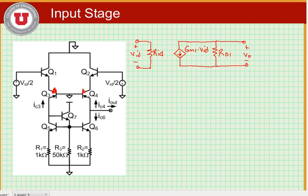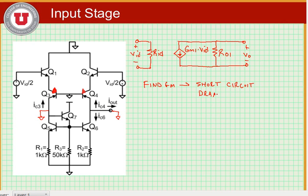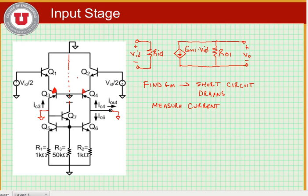To measure GM, what we're going to do is short circuit the drains of these transistors and measure the current that flows into the short circuit due to a voltage at the input. Looking at the half circuit, we'll note that we have a line of symmetry, so we can look at the half circuit consisting of either Q1 and Q3, or Q2 and Q4.